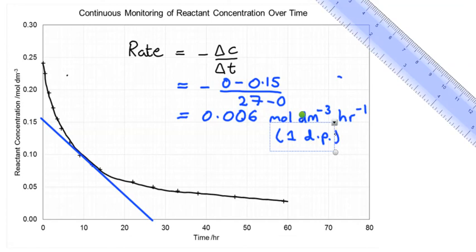So that's how you determine rates of reaction using tangents. So my three tips again, extend your axes, use a clear ruler, as long a ruler as possible and extend your tangents so they touch the axes on either end.